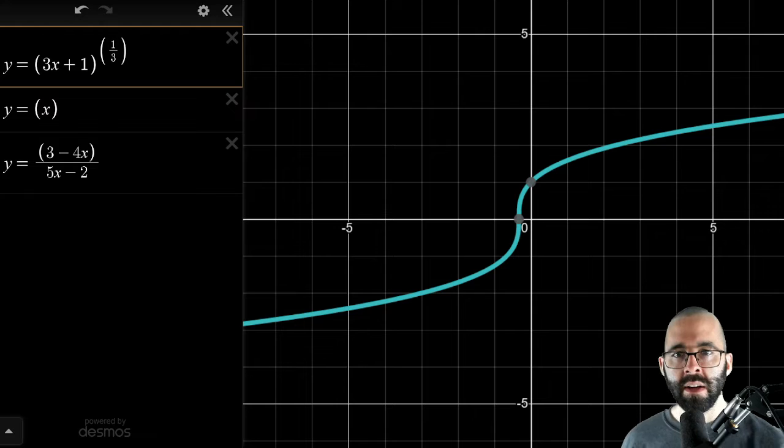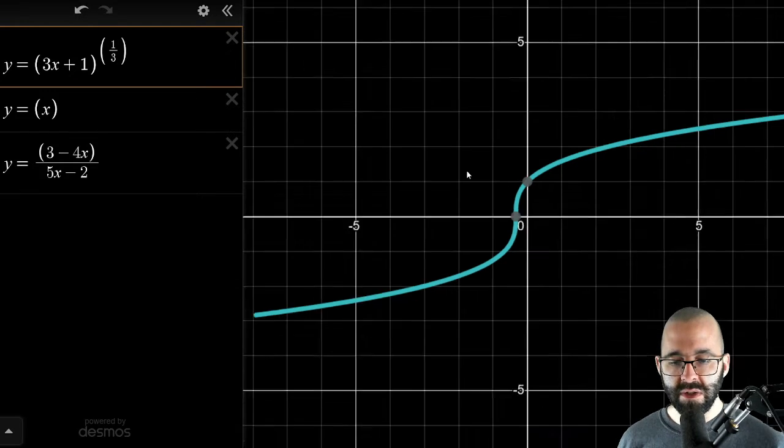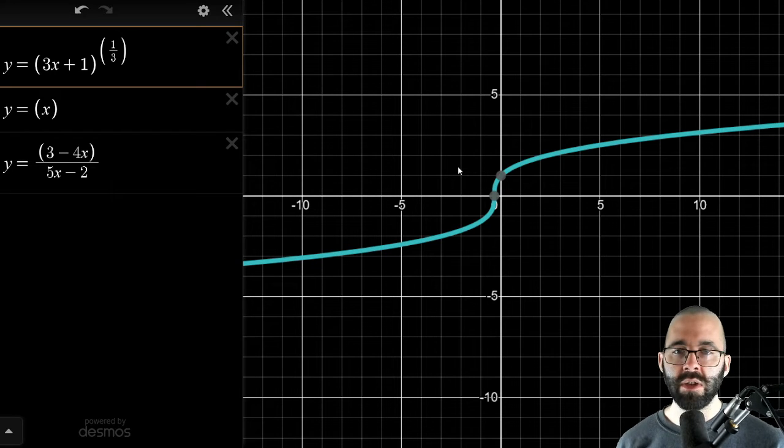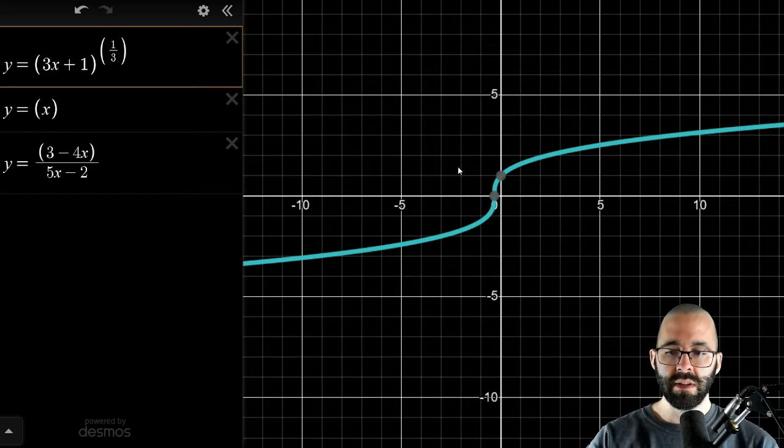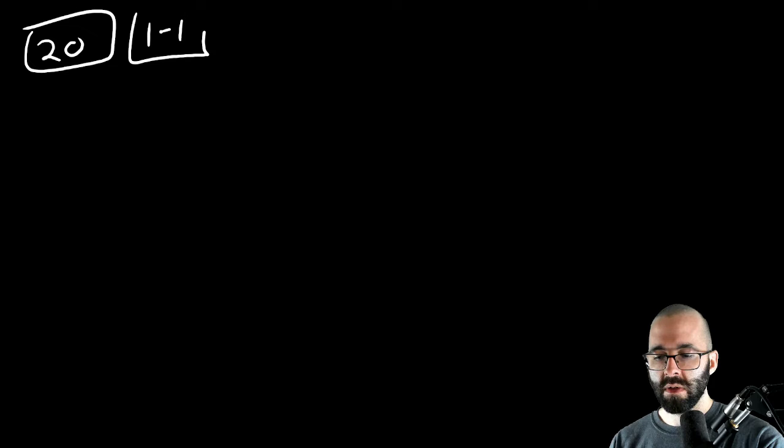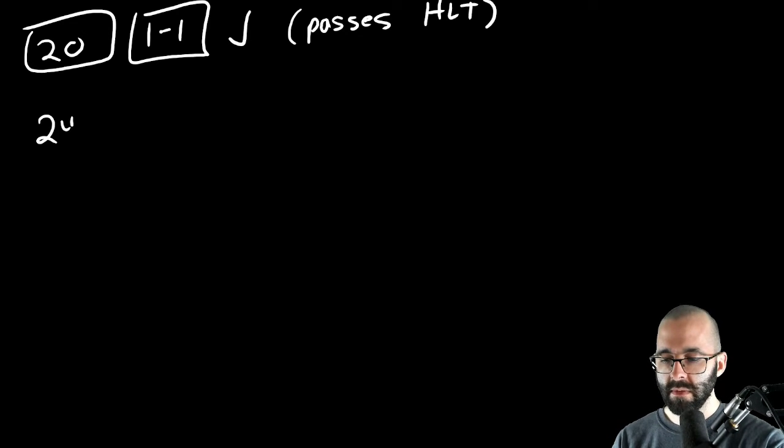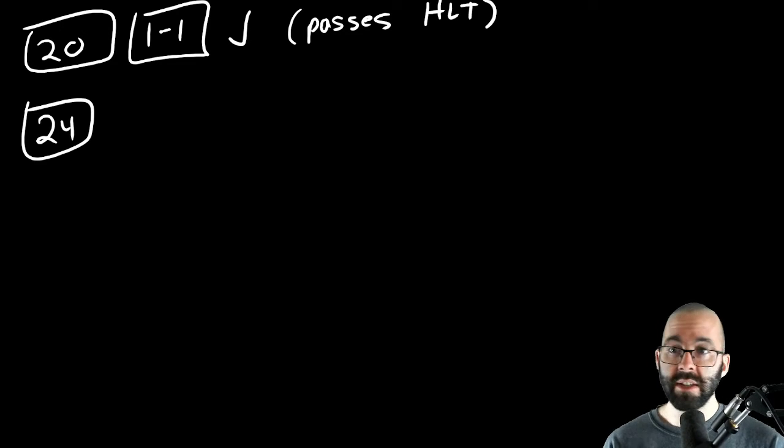So is this function one-to-one? Does it pass the horizontal line test? And yes, even if we zoom out, any horizontal line we draw only crosses this graph once. This is one-to-one. This will have an inverse function. And if you want to show your work, you could say this passes the horizontal line test.